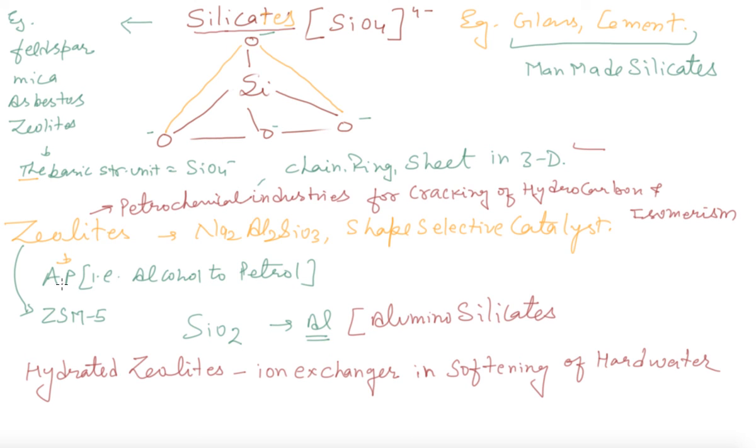Actually, it is used to convert alcohol into petrol. I have written here AP, AP means alcohol to petrol. Its one example is ZSM5. Actually, what is zeolite? In silicon dioxide, some of silicon units are replaced by aluminum and they are commonly known as aluminum silicate. So these are very important compounds useful in the industry.